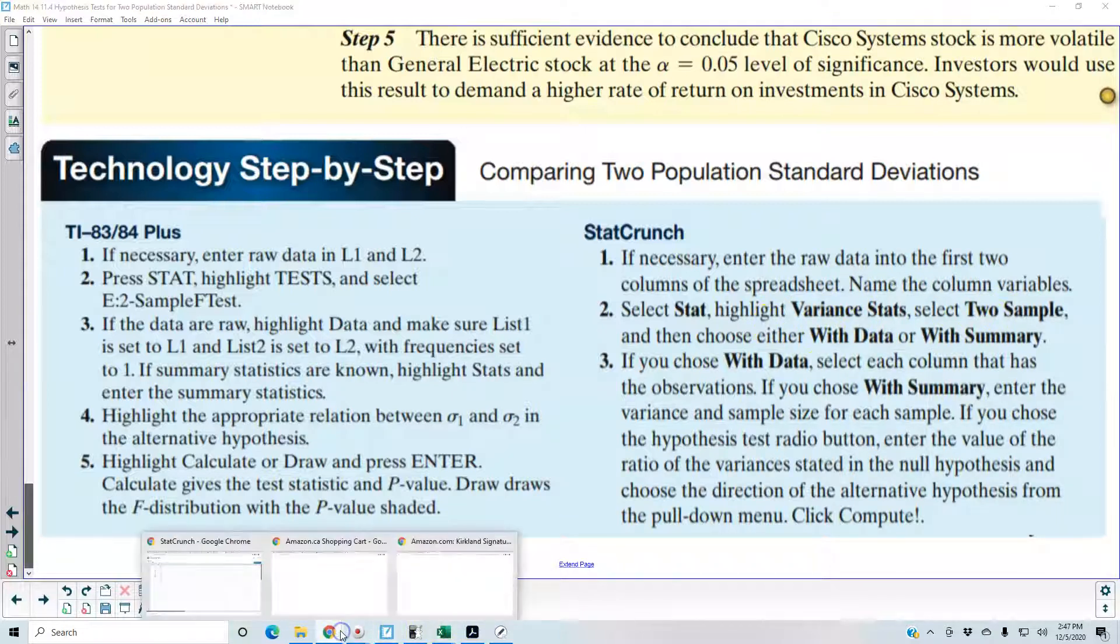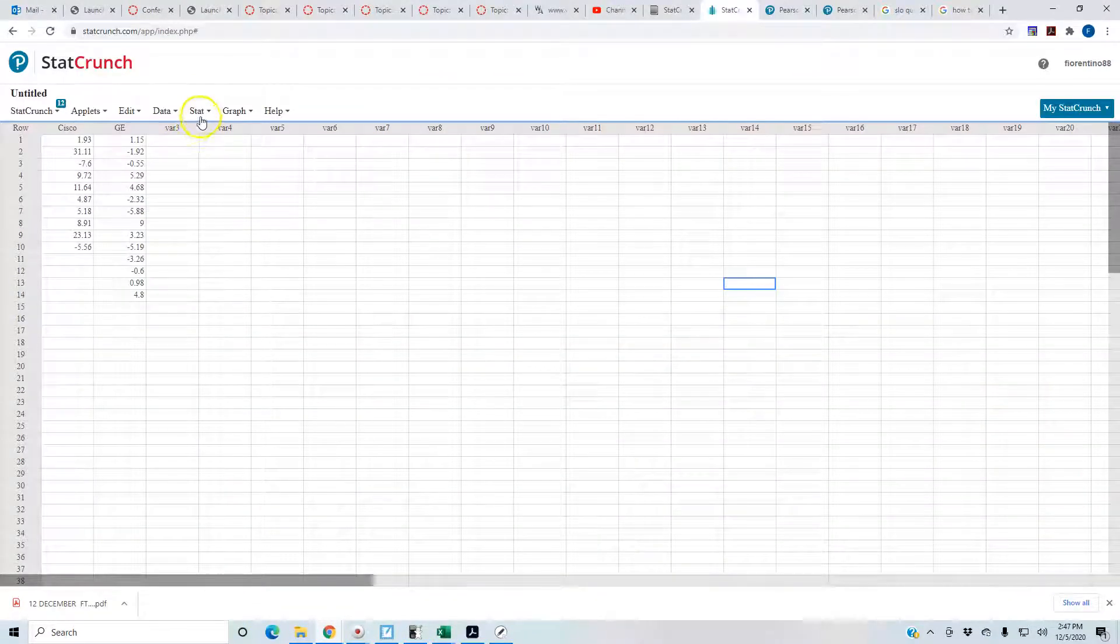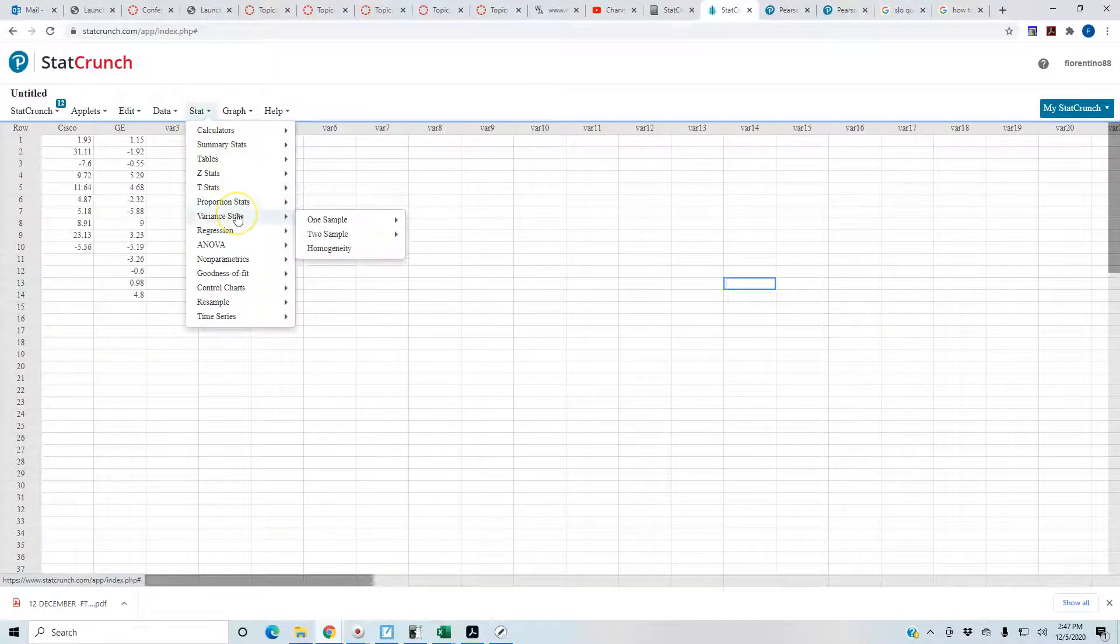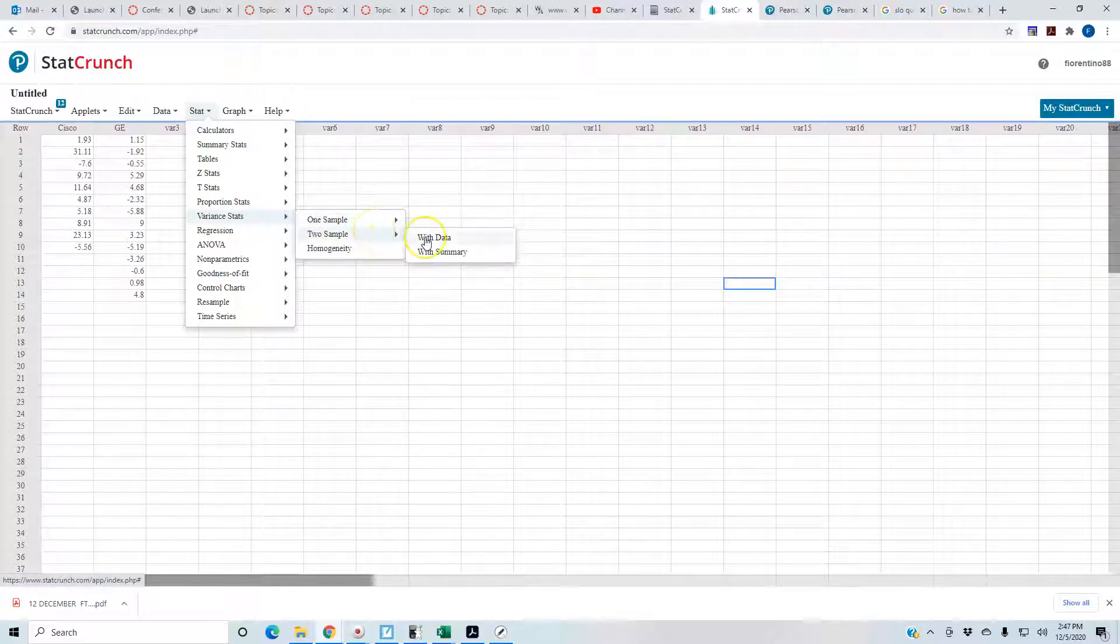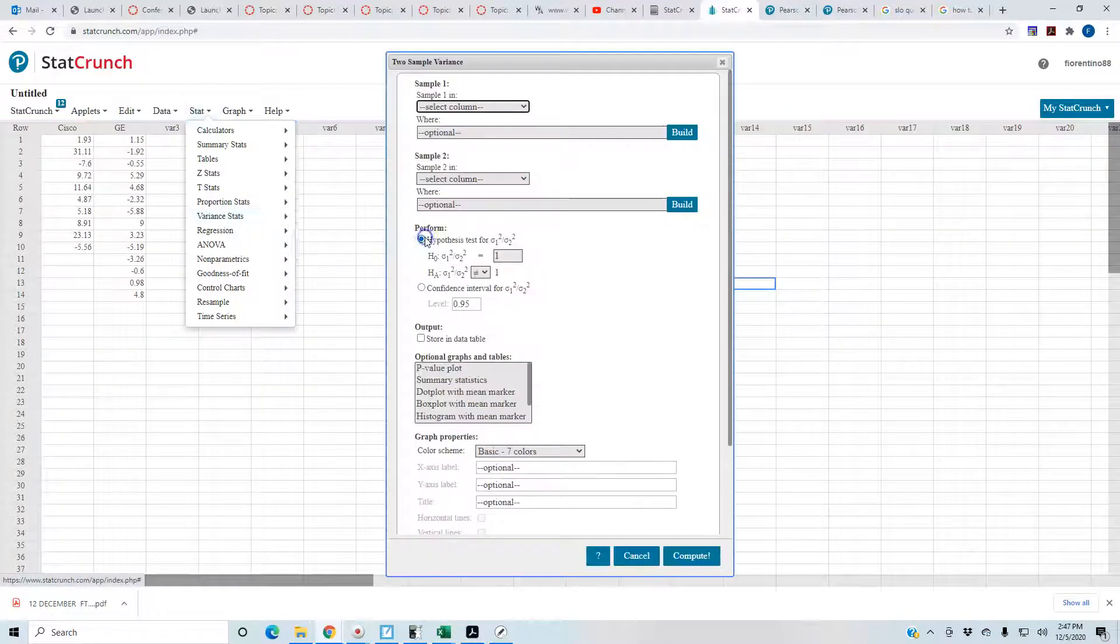We're going to go to Stat, then go to Variance Stats. Since we have two columns, we have a two sample with data, so we're going to hit Enter.